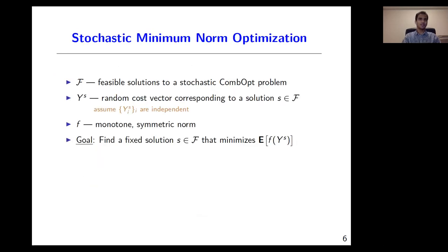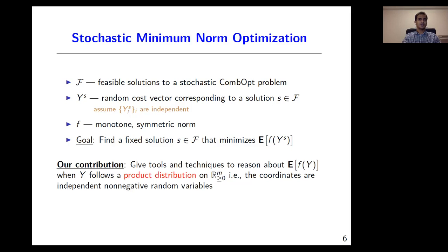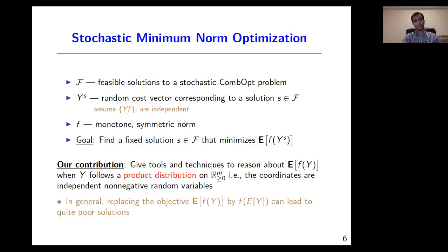More generally, we motivate the abstract problem of stochastic minimum norm optimization, where we have an underlying combinatorial optimization problem. For each feasible solution, we assume that the coordinates of the induced cost vector are independent. Our goal is to find a feasible solution that minimizes the expected f-norm of the induced cost vector. Our contribution is to develop tools and techniques to reason about the expected f-norm of a random vector with independence properties among its coordinates — we refer to such a random vector as a product distribution. It is not hard to see that reducing this problem to deterministic f-norm optimization by working with expected costs can lead to poor solutions.